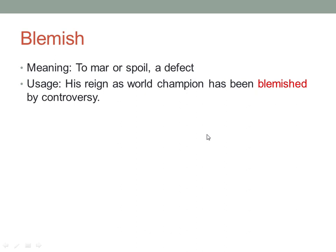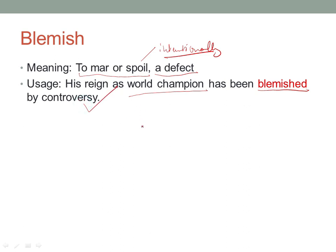The next word is 'blemish'. Blemish means to mar or spoil, or a defect. It can be done intentionally or it can occur naturally. For example: 'His reign as a world champion has been blemished by the controversy.' A sports player who was a world champion had his reputation spoiled by a controversy — that is blemished.